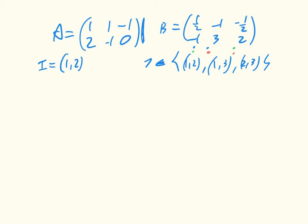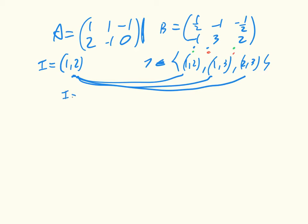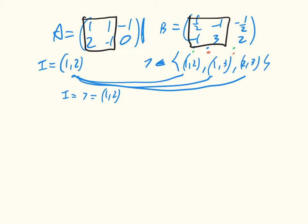We look at all possible pairings: i={1,2} with j={1,2}, with j={1,3}, and with j={2,3}. As an example, I'm going to consider i = j = {1,2} — both players playing their first two strategies. We use the best response condition, which tells us that a mixed strategy is a best response if all strategies in its support yield the same utility, and that utility must be maximal.